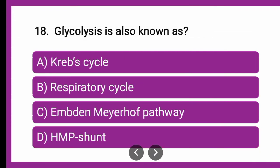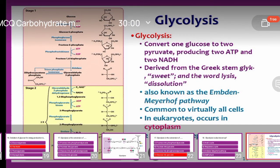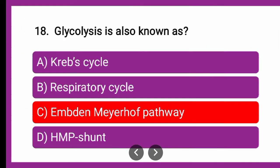Next question: Glycolysis is also known as — whether it is also known as the Krebs cycle, respiratory cycle, Embden-Meyerhof pathway, or HMP shunt? The correct answer is the Embden-Meyerhof pathway, also known as EMP pathway.